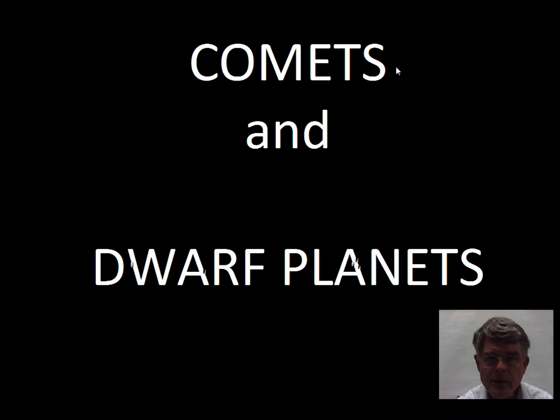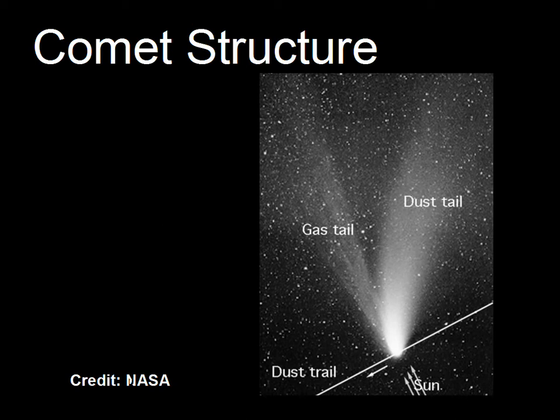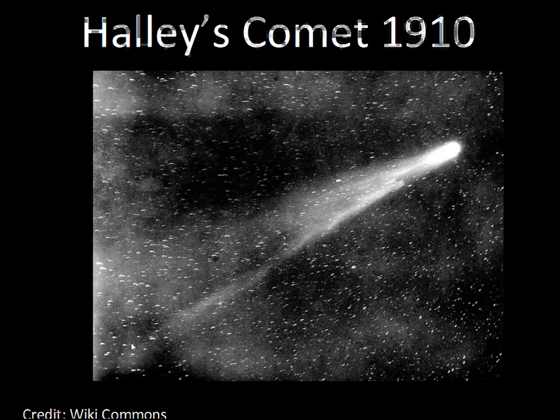This video will discuss comets, their structure, and their source. Looking at photographs of comets, we find a coma, a dust tail, and a gas tail. The gas tail consists of ionized gases — when the ice melts, gas comes off and the Sun's ultraviolet light ionizes it. The solar wind then stretches that gas tail pointing away from the Sun. The dust tail comes from silicate particles embedded in the ice, which come off as the ice melts.